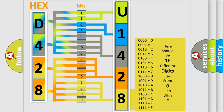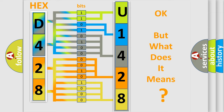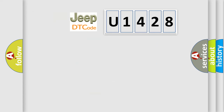We now know in what way the diagnostic tool translates the received information into a more comprehensible format. The number itself does not make sense to us if we cannot assign information about what it actually expresses. So, what does the diagnostic trouble code U1428 interpret specifically for Jeep car manufacturers?